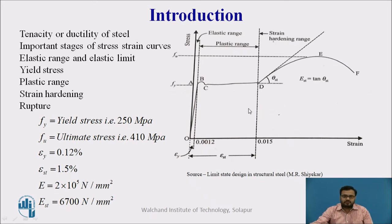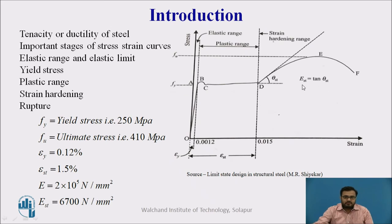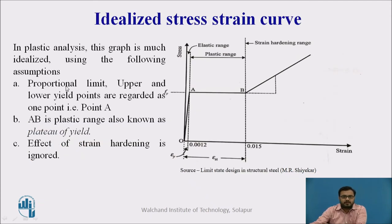Now for plastic analysis, we idealize the stress-strain curve. We have the upper yield point, lower yield point, and limit of proportionality. For plastic analysis, we assume these three points are regarded as one single point A. The range OA is the elastic range, and AB is the plastic range — also known as the plateau of yield. The effect of strain hardening is ignored in plastic analysis.